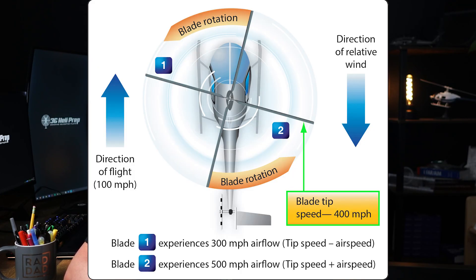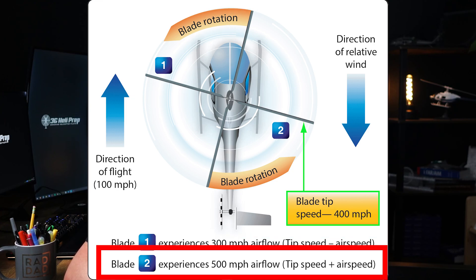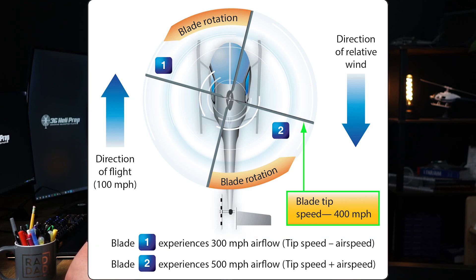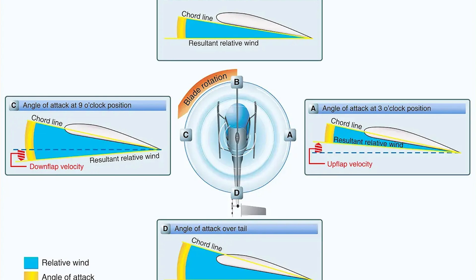Blade flapping helps to correct this imbalance. As the blade moves into the airflow — the advancing blade — it experiences an increase in relative wind speed, and therefore generates more lift at the same angle of attack. To counteract this lift, the advancing blade flaps upward. As it flaps up, the angle of attack is actually decreased, reducing the lift generated by that blade.